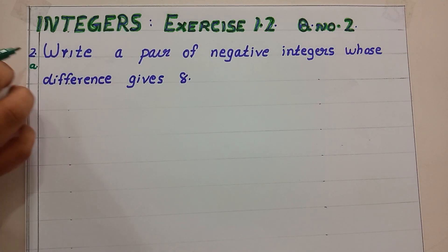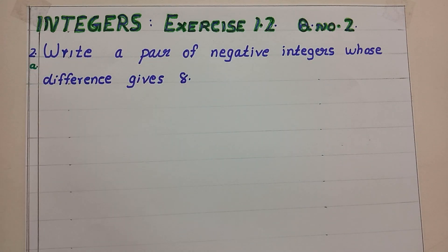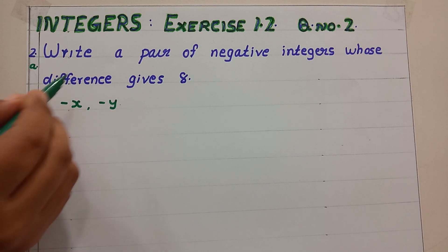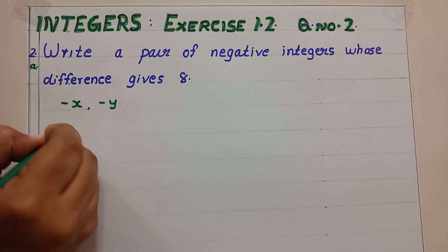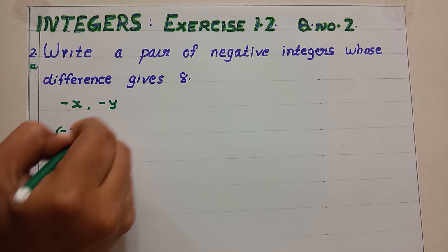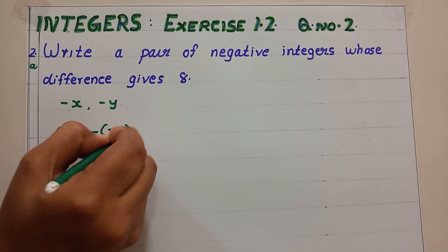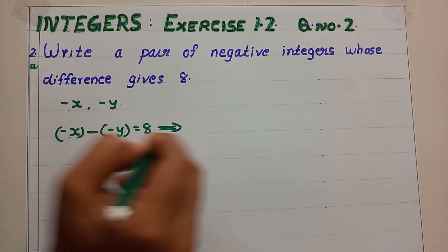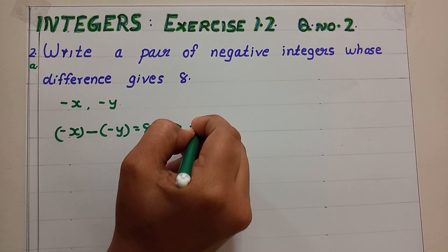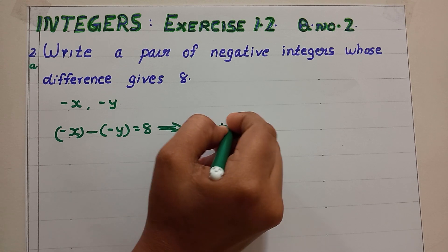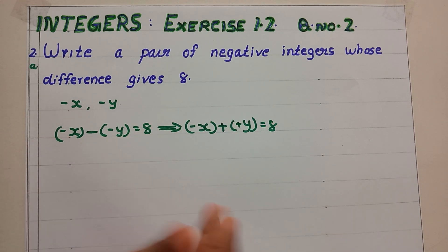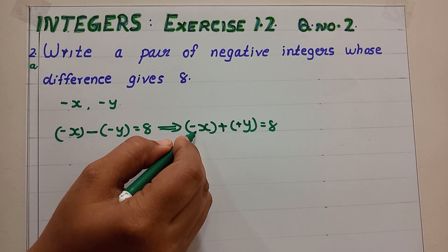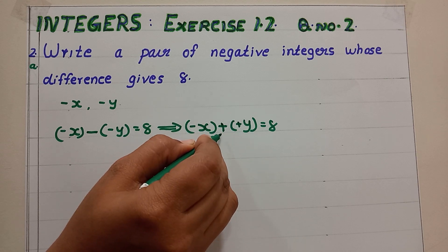Question number 2 says: write a pair of negative integers whose difference gives 8. That means we are required to find 2 negative integers. So let them be minus x and minus y, in such a way that minus x minus minus y equals 8. Changing this subtraction into addition: minus x plus y equals 8. So our aim is to find a negative integer and a positive integer whose sum is 8.